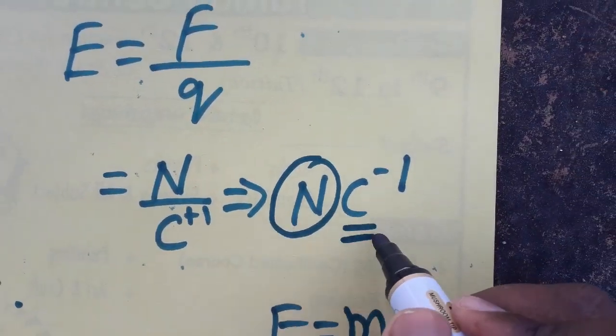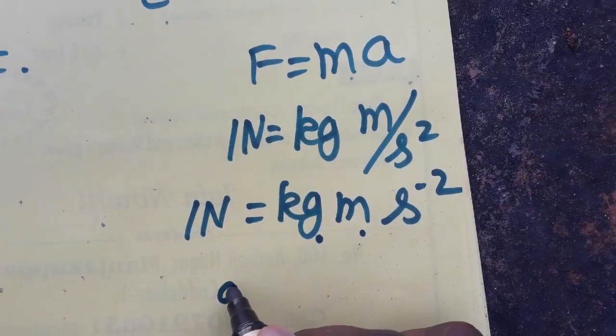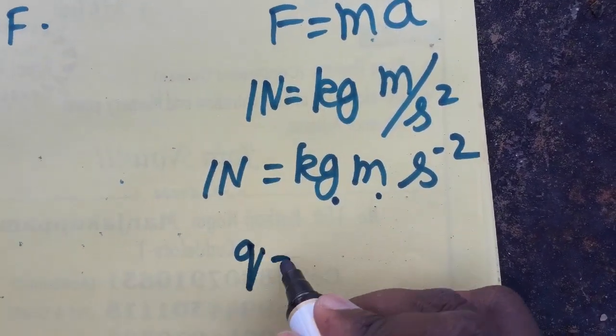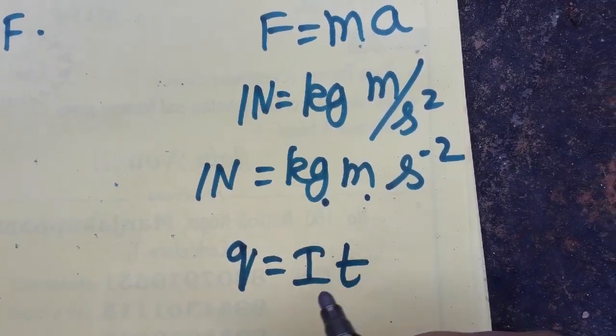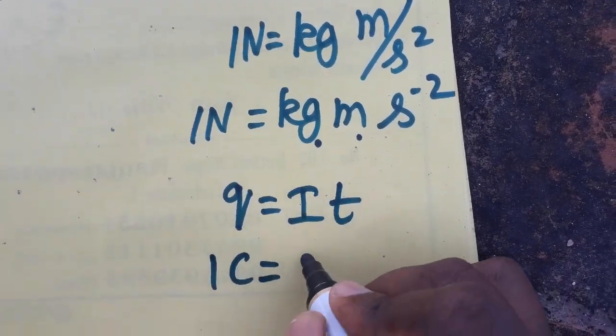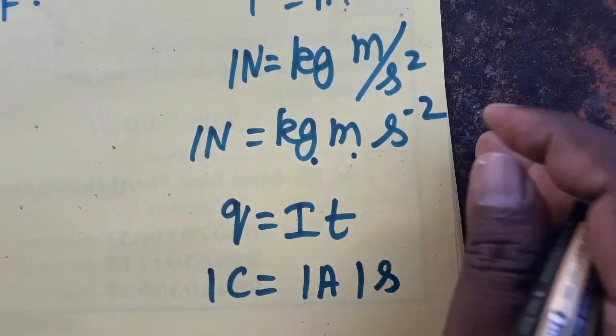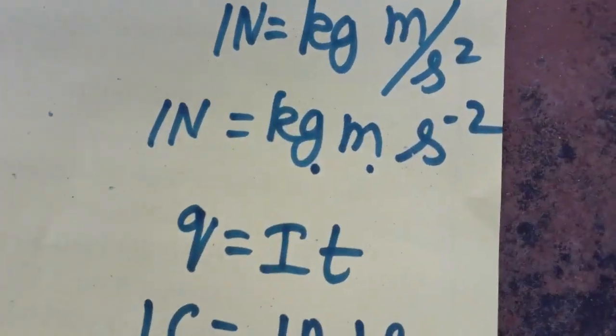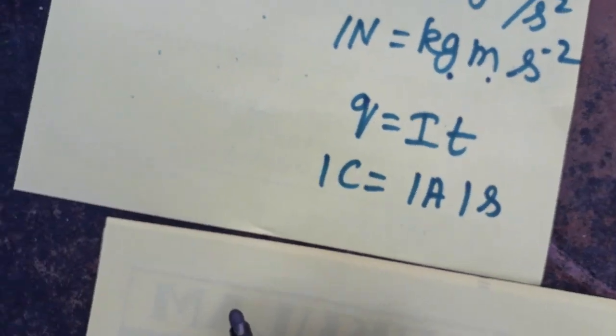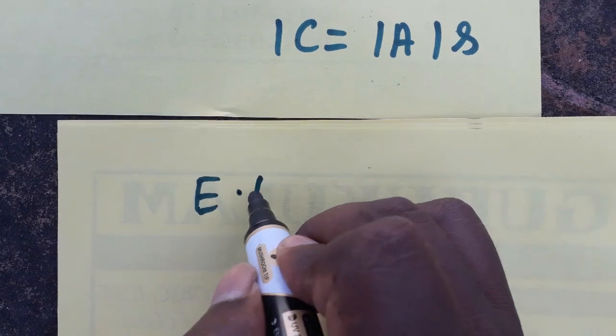Now we need to know what is coulombs. Current is equal to charge by time, charge is equal to current into time. That means 1 coulomb is equal to 1 ampere into 1 second. So we got what is newton, we know what is coulombs.